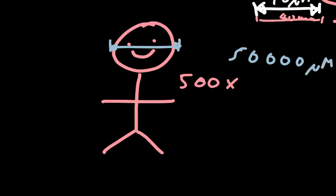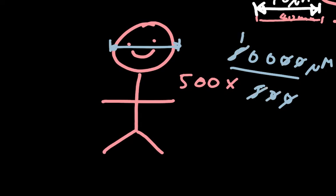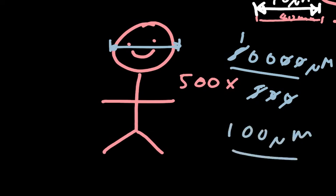We know this is an image of something larger than the object and that magnification is the number of times bigger the image is than the object. So if we take the image size and divide by the magnification, we get the actual size. That gives us 100 micrometres in real life for the width of the head — 50,000 micrometres divided by 500 equals 100 micrometres.